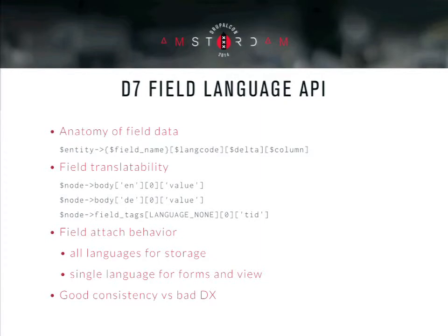A field may be translatable or not, and this means that the lang code variable may be an actual language code, or the un-lang code — or better, the language none constant — in the case the field is not translatable. This means we have to check every time for field translatability, as you all know.